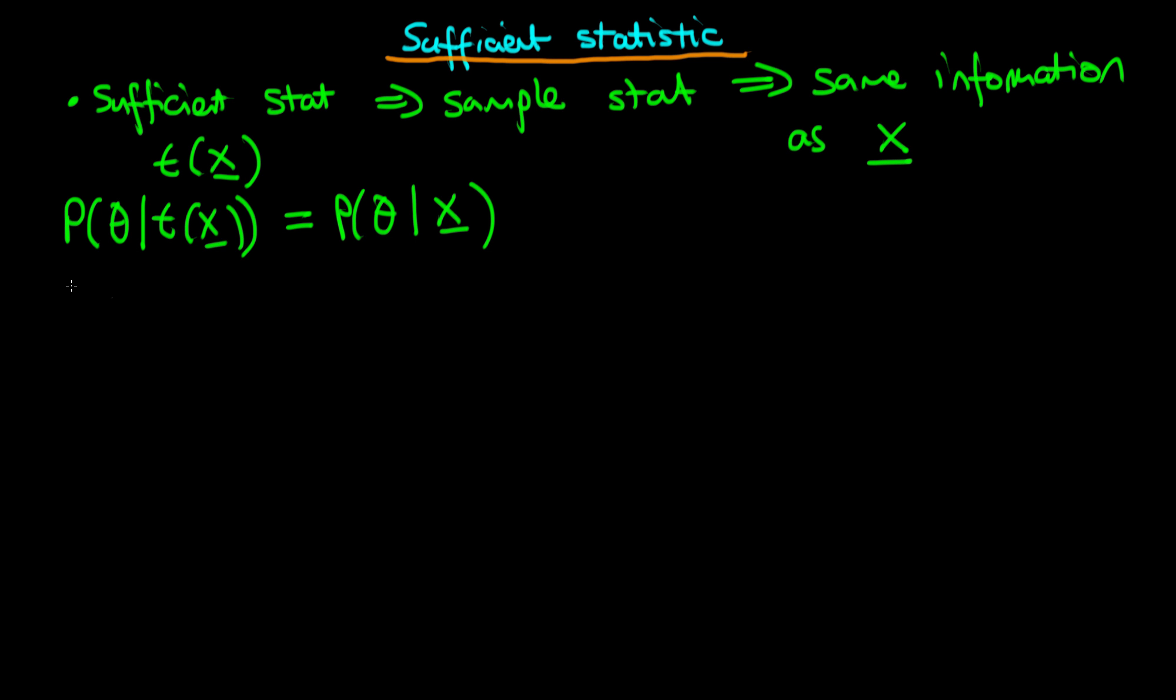And the example that I'm going to use to describe what is meant by a sufficient statistic is the example of flipping a coin. So we're going to imagine there is some data generating process, which we're going to assume is that which is usually used to represent flipping a coin, which is a Bernoulli distribution, which has got one parameter theta, which in this case I'm going to say represents the probability of the coin landing heads up.